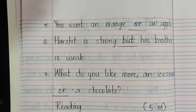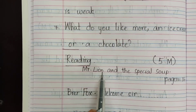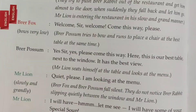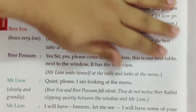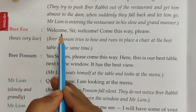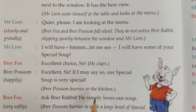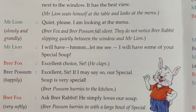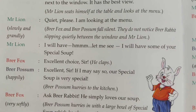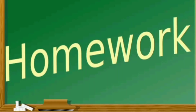Now for reading, you have to read from the lesson 'Mr. Lion and the Special Soup,' page number 16. Open page number 16. Start reading from: 'Brer Fox: Welcome sir, welcome. Come this way please.' Till: 'Ask Brer Rabbit — he simply loves our soup.' You have to practice reading this without any mistakes and send your audio recordings.